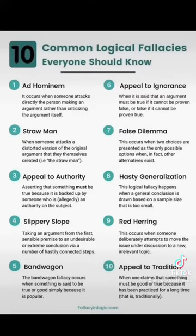Number two: the straw man — when someone attacks a distorted version of the original argument that they themselves created. Number three: appeal to authority — asserting that something must be true because it's backed up by someone who is allegedly an authority on the subject.